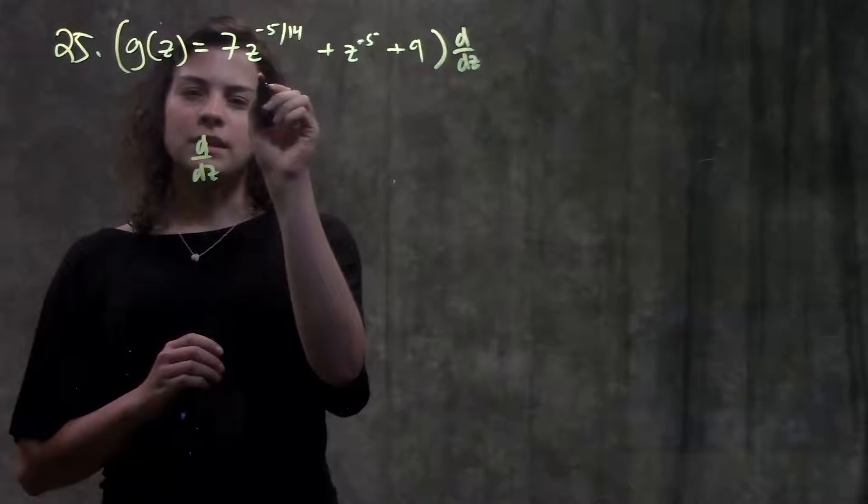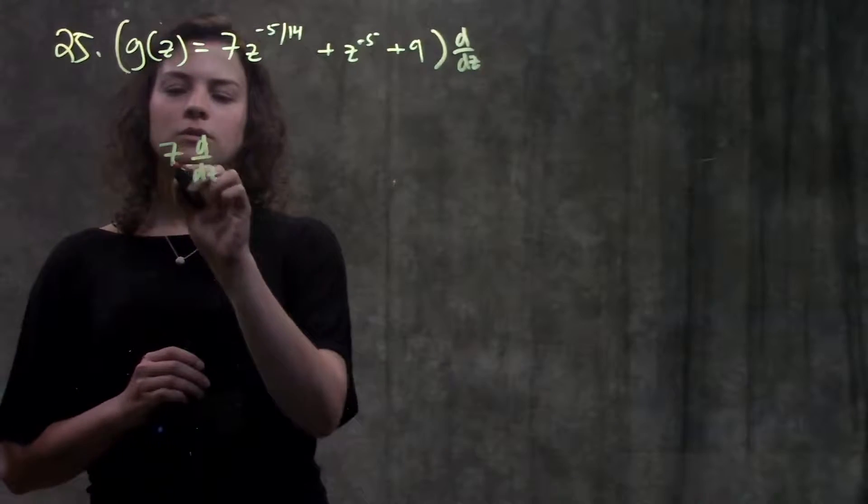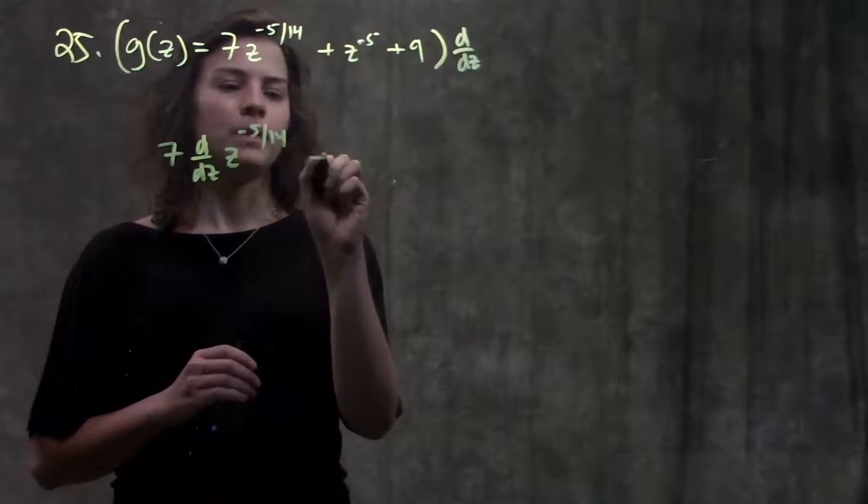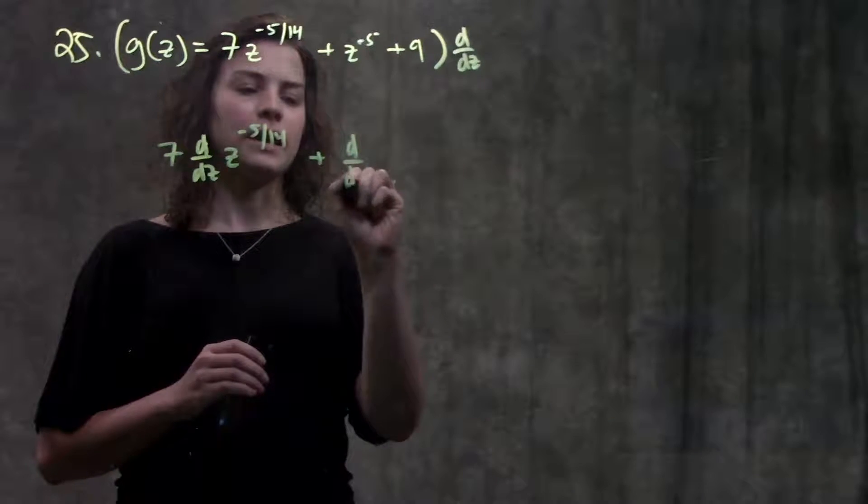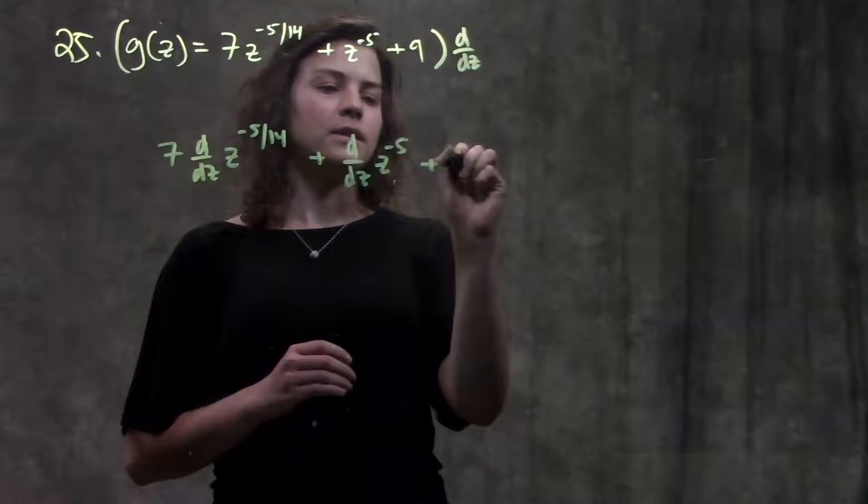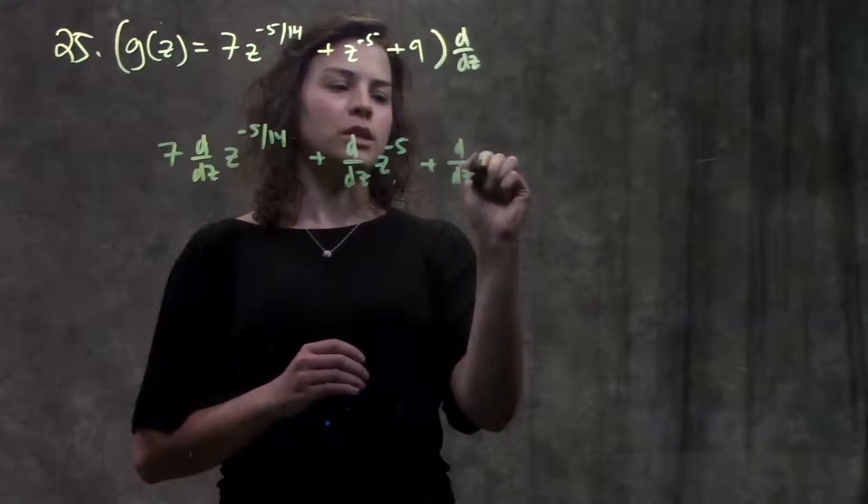d over dz. Remember, when you have a constant, you can just pull that out to the front. So I'll have 7 times what's left over, z to the minus 5 over 14, plus the derivative of the second part, which is just z to the minus 5, plus the derivative of the last part, which is just 9.